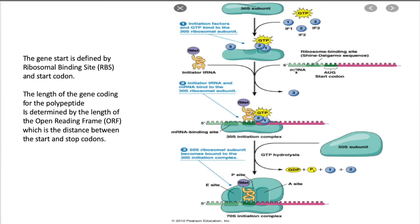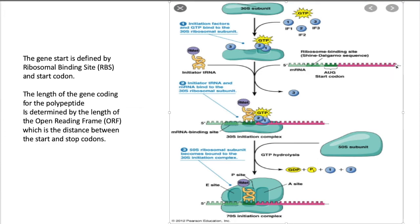The ribosomal binding site defines the associated start codon, which is the start of the protein coding part of the messenger RNA. The termination codon determines where the peptide stops. So the coding part of the gene is determined by the first AUG and the terminating codon.